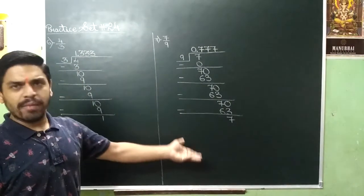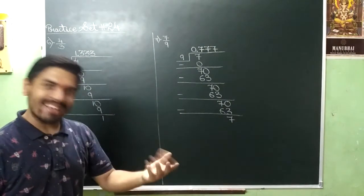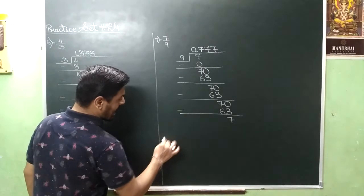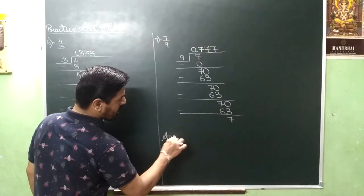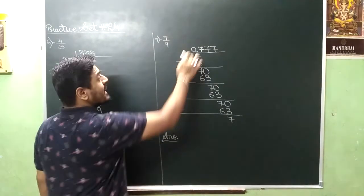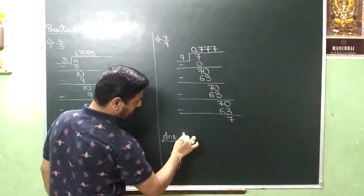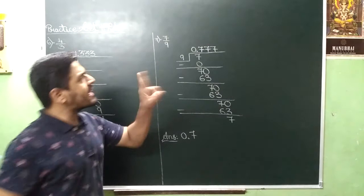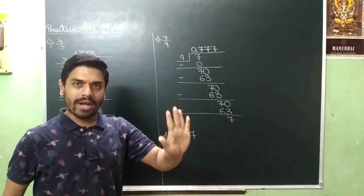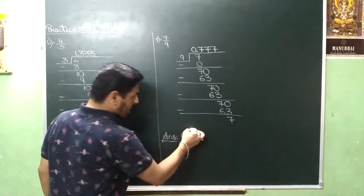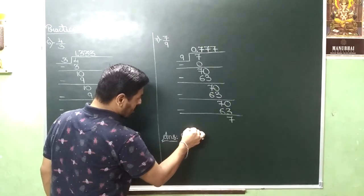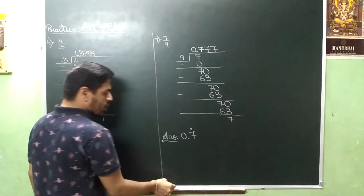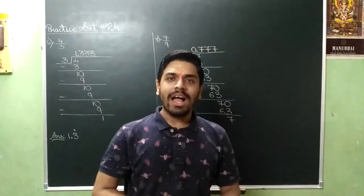Bas, abh iske aake mujhe kuch bolna nahi hai. Aapko pata chal gaya hai. So leave a line and you will write answer. 0.7. And single digit 7 bhi repeat ho raha hai. So you will put a bar. So you will put a dot.